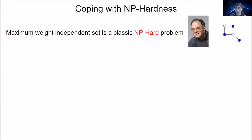I'm going to start by talking about the independent set problem. If you need a quick refresher, I have this graph over here on the right-hand side. The blue vertices make an independent set because there's no edge going between any two of the blue vertices. In fact, these blue vertices make a maximum independent set because there's no independent set on more than three vertices in this graph.